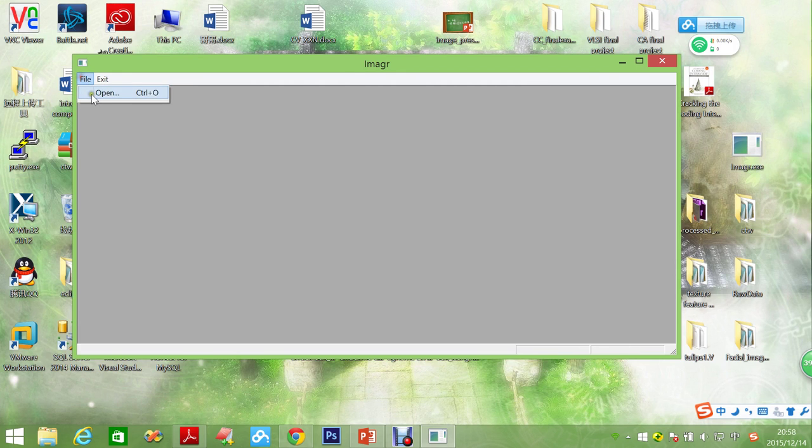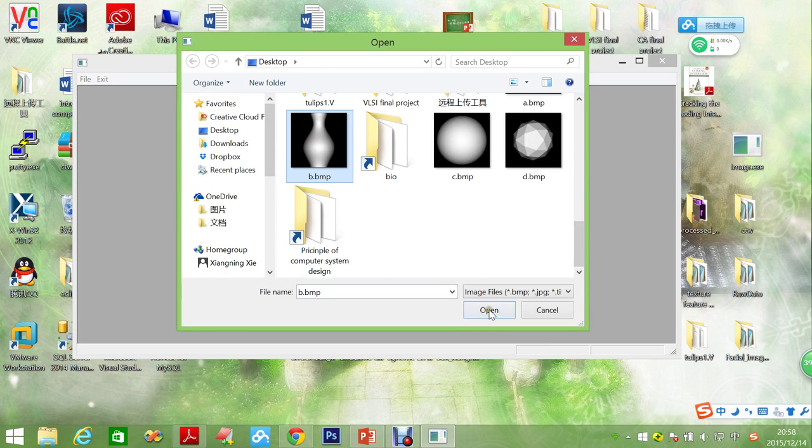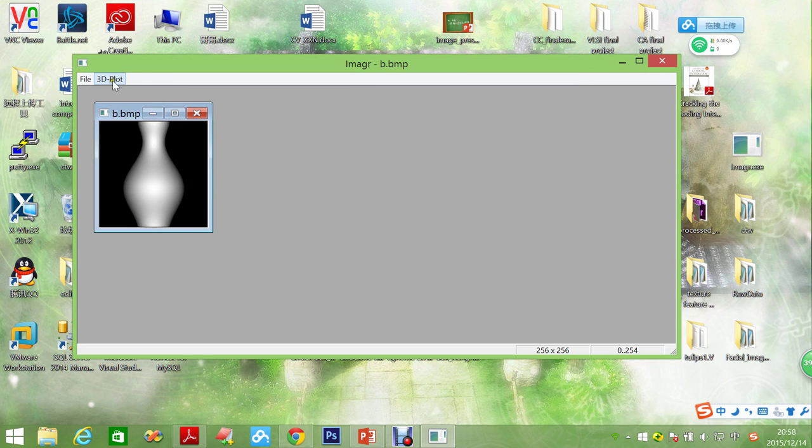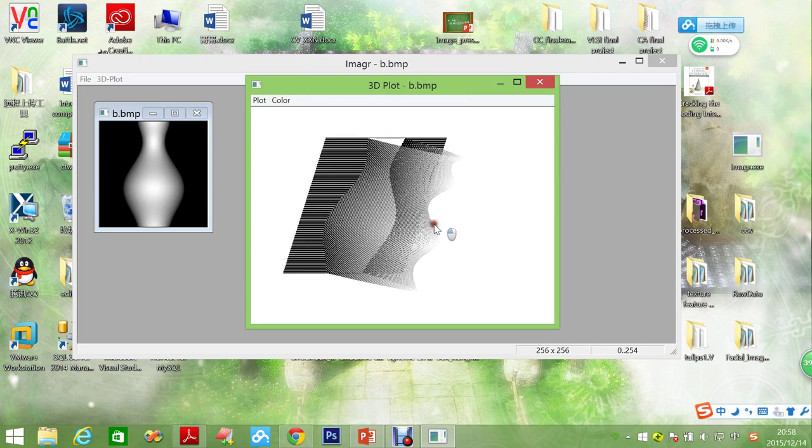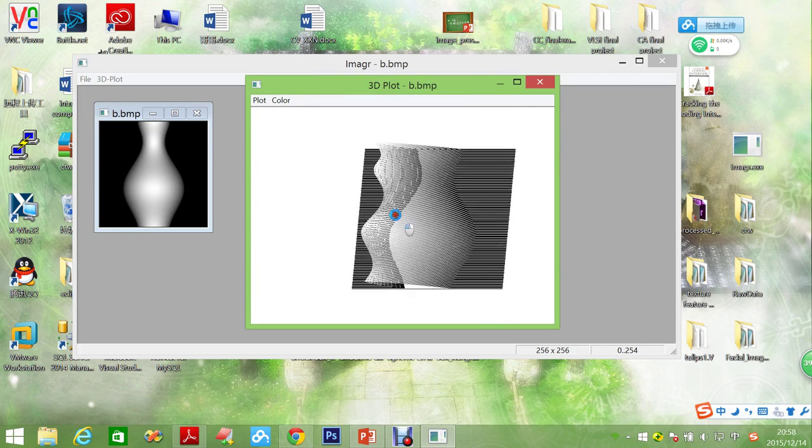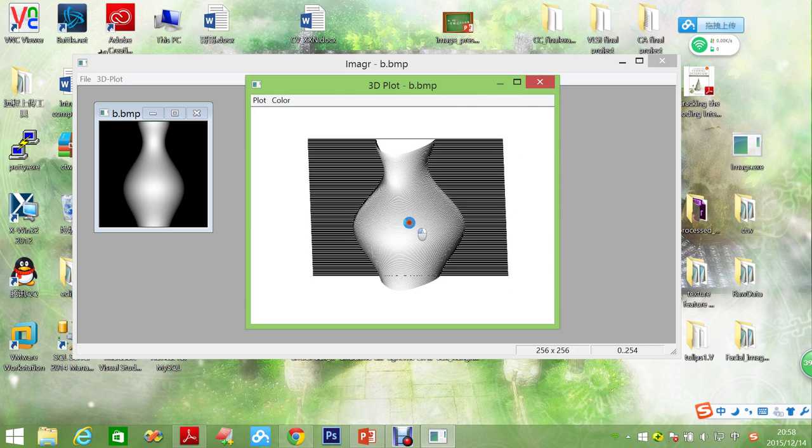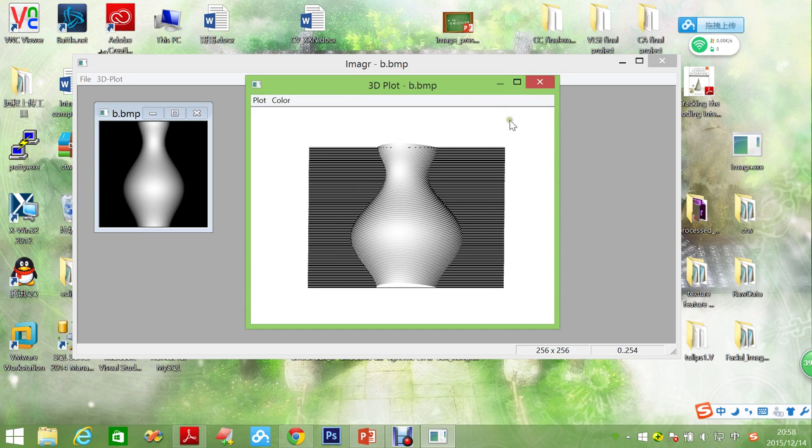And let's try another photo, the vase. From here you may see the three-dimensional image of a vase. It is just like the one we used in real life, so this one also has a really good performance.